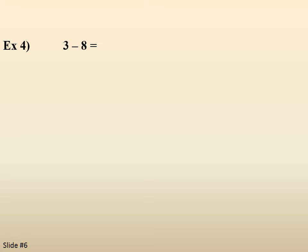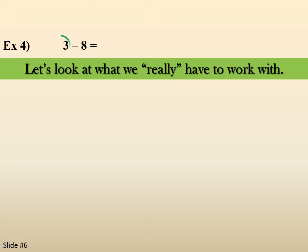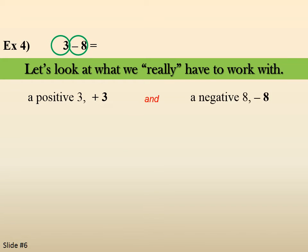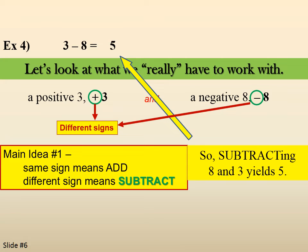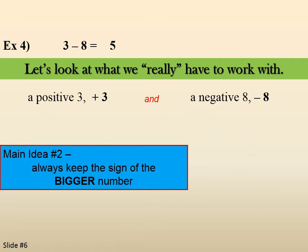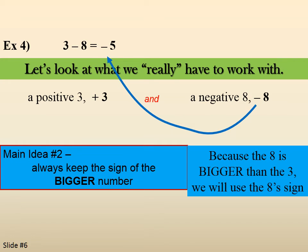3 minus 8. We've got a positive 3 and a negative 8. The signs are different, so that means we're going to subtract. 8 minus 3 gives us 5. We keep the sign of the bigger number — since 8 is bigger than 3, we take 8's sign — and we end up with negative 5. That's basically what we do throughout: look at two numbers, look at their signs. If they're the same, we add; if they're different, we subtract. The result always takes the sign of the bigger number.